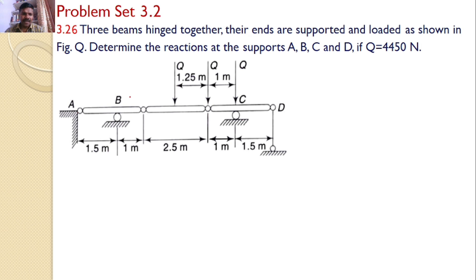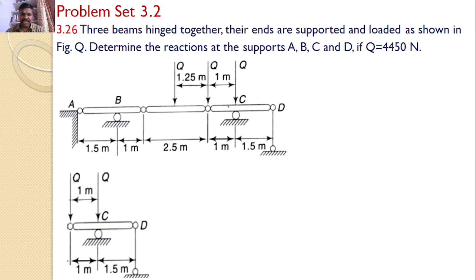For that, we will analyze the A-B beam first, then the C-D beam, and then the total system as a single unit. First, I will consider the free body diagram of the beam C-D.